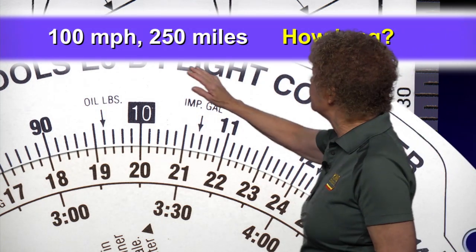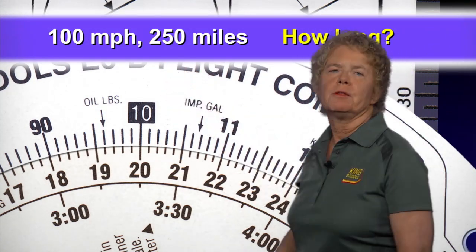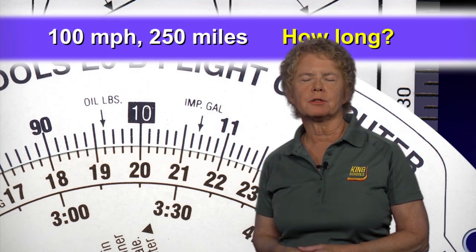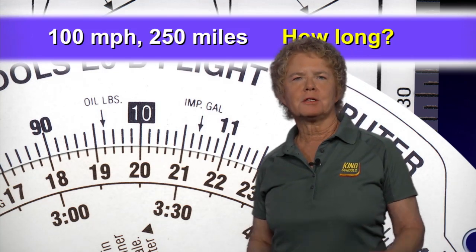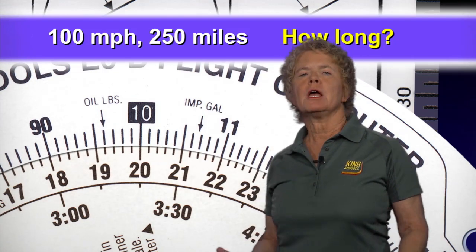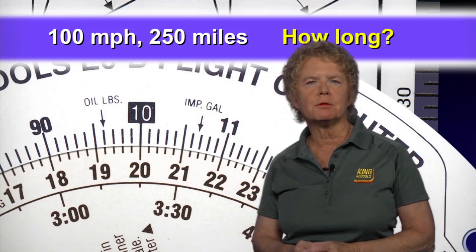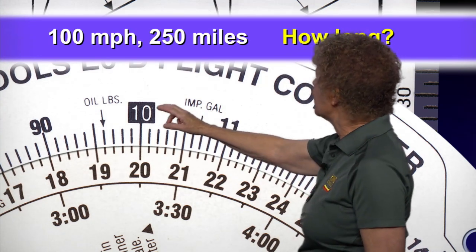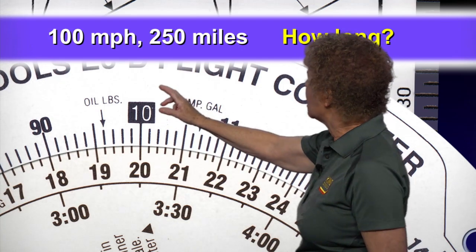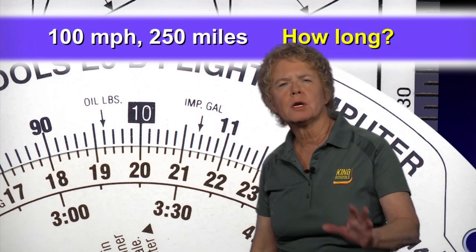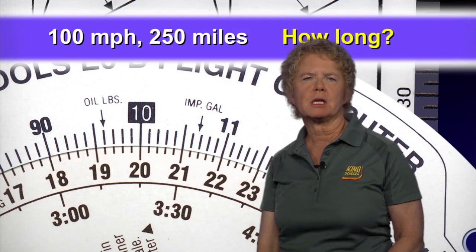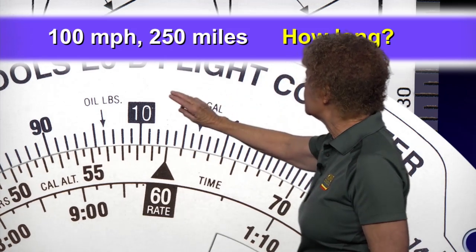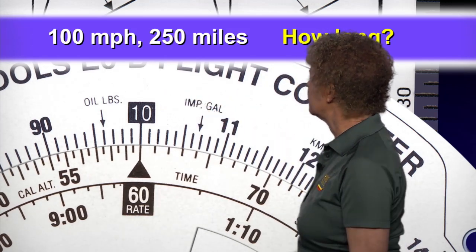Let's assume the FAA gives you these numbers: you're traveling at 100 miles per hour and you want to travel 250 miles. The question is how long will it take you to cover that distance? We don't have 100 on the flight computer, so we're going to use 10 to represent 100 instead. Find 10 on the outside scale — 100 miles an hour means you've traveled 100 miles in 60 minutes. Rotate the inner dial until 60 minutes is underneath the 10 representing 100 miles on the outside scale.